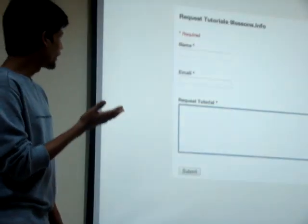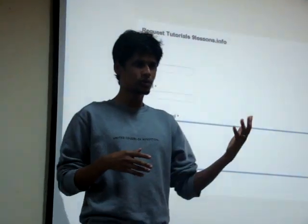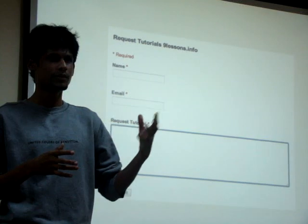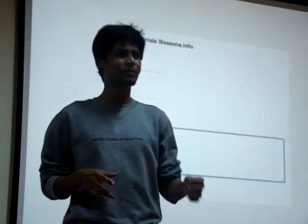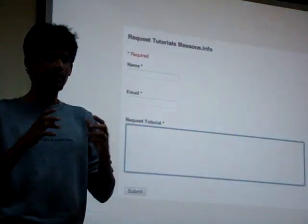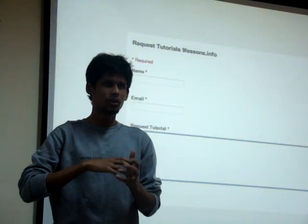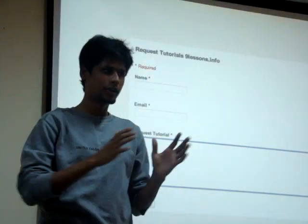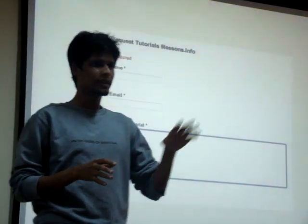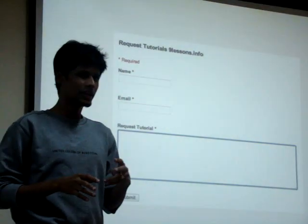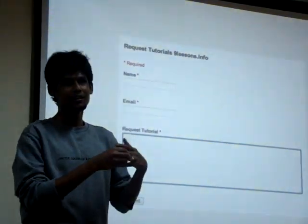I created one more feature called 'request tutorial' on 9lessons. Whatever the user wants, I will filter based on the questions. Now I have some 700 tutorial requests there, and I have no time. I have to filter and present what is the best one. Because I am thinking for the long term — every article wants to be staying for the coming 2 to 3 years. Every tutorial I am making like a book. Every month I am writing 4 articles. One article for me — I am writing advanced things like Twitter open authentication protocols and all.